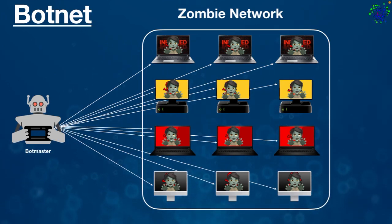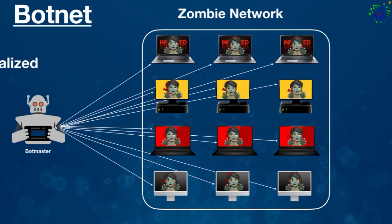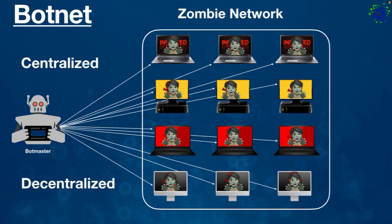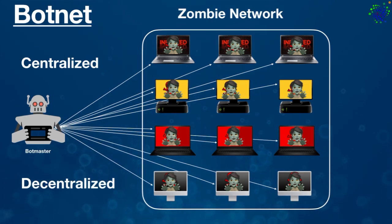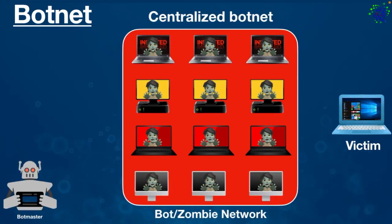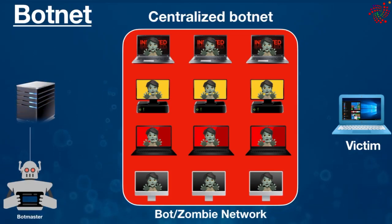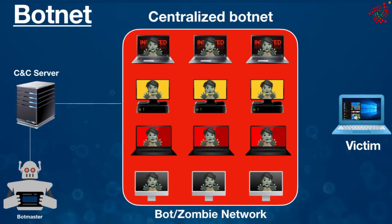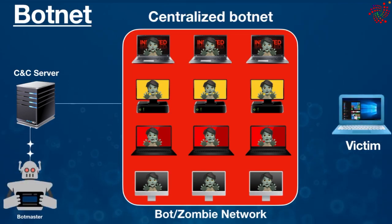Once the botnet is created, there are generally two approaches to carry out a botnet attack: a centralized or decentralized model. The main difference is how instructions are issued to members of the botnet. In the centralized botnet attack model, a hacker creates a command and control server to issue commands to the network of bots. For example, a bot master who wants to attack a user sends commands to this server.